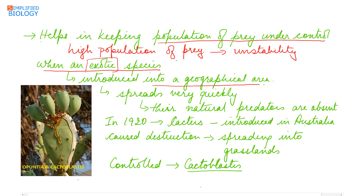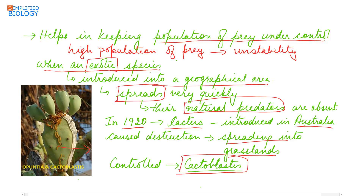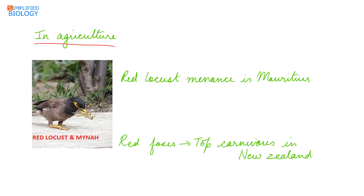When an exotic species — a new species introduced into a geographical area — spreads quite fast due to the absence of natural predators. For example, in 1920 cactus was introduced in Australia, causing destruction by spreading into the grasslands. It was controlled by the insect Cactoblastis, a moth or herbivore that eats cactus. In agriculture, predation is used for biological control of pests.